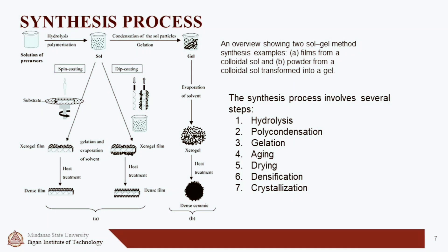For the synthesis process, the sol-gel technique is a wet chemical method used for the fabrication of glassy and ceramic materials, particularly metal oxides such as silicon and titanium oxides. The synthesis process involves seven steps. First is hydrolysis: the metal oxide precursor is hydrolyzed in water or with the help of alcohol to create a sol. Second is polycondensation: the sol undergoes polycondensation, resulting in a gel-like network that contains both liquid and solid phases. Third is gelation: the sol changes into a gel, which is a semi-solid state with a three-dimensional network structure. Fourth is aging: the gel is left to age, during which its structure and properties may change.